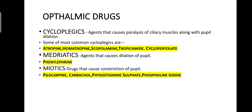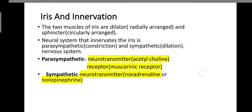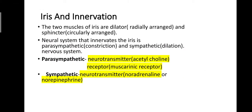Miotics are drugs that cause constriction of the pupil. Examples include pilocarpine, carbachol, physostigmine sulfate, and phospholine iodide.